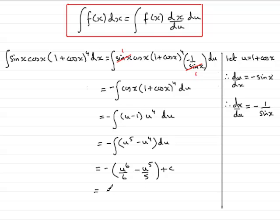which would be 1 thirtieth, so that would be 30 there, times top and bottom by 5, and that gives us 5u to the 6, minus, and times top and bottom here by 6, so we have 6u to the 5, plus c.